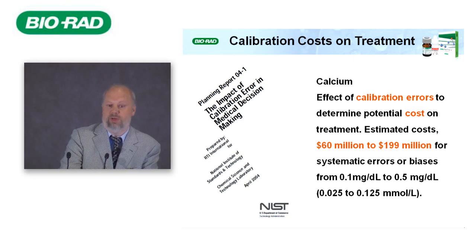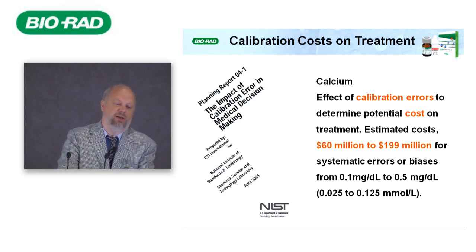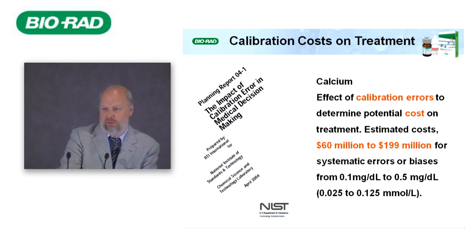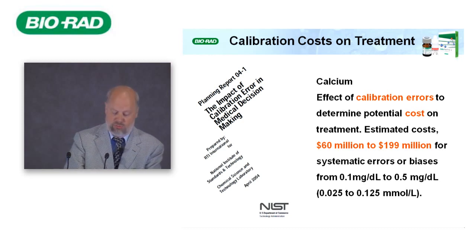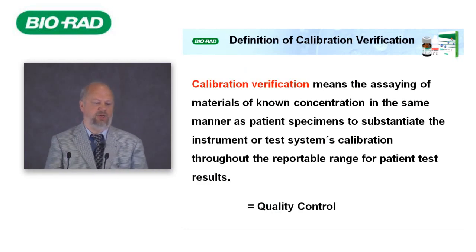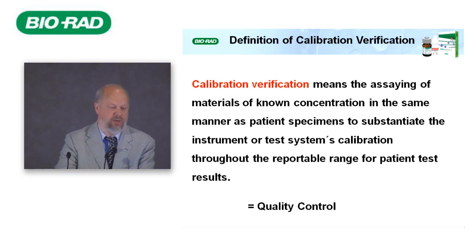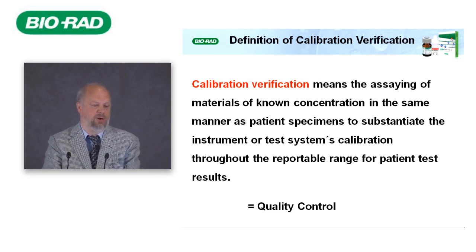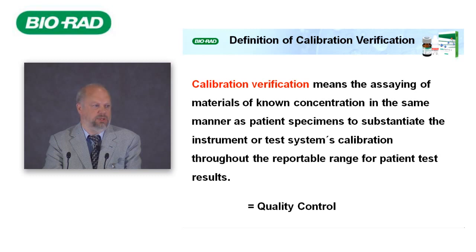The calibration cost on treatment: here is an example from the United States on calcium. If you don't do proper calibration on calcium, this error costs approximately $60 to $199 million annually — due to additional patient investigation and potentially wrong or misleading treatment. Calibration verification means assaying material of known concentration in the same manner as patient specimens, to substantiate the instrument's calibration throughout the reportable range.